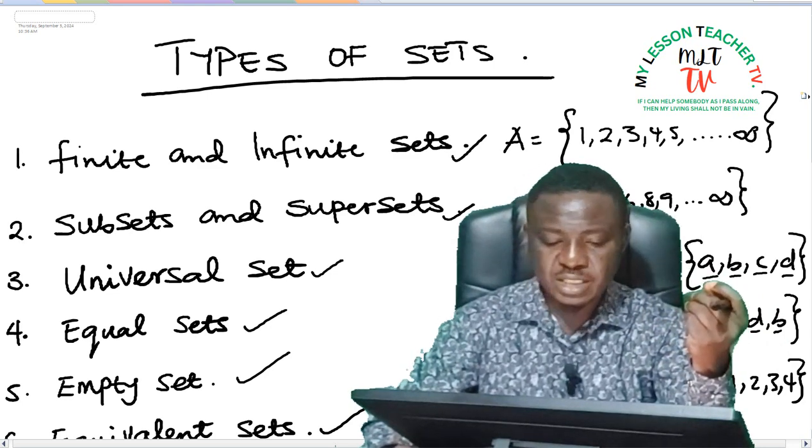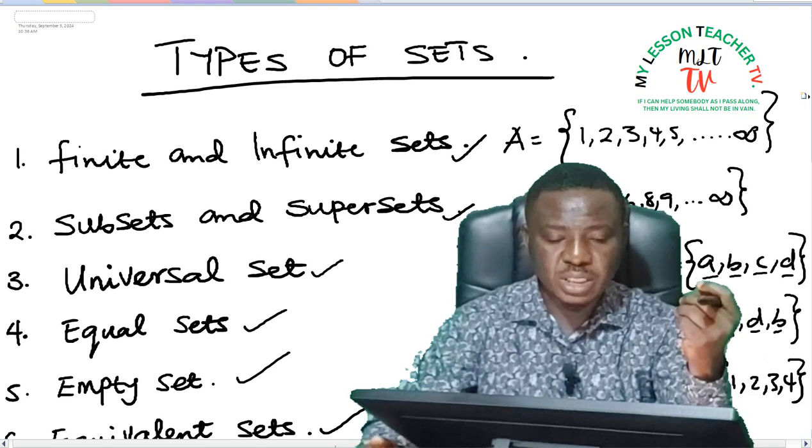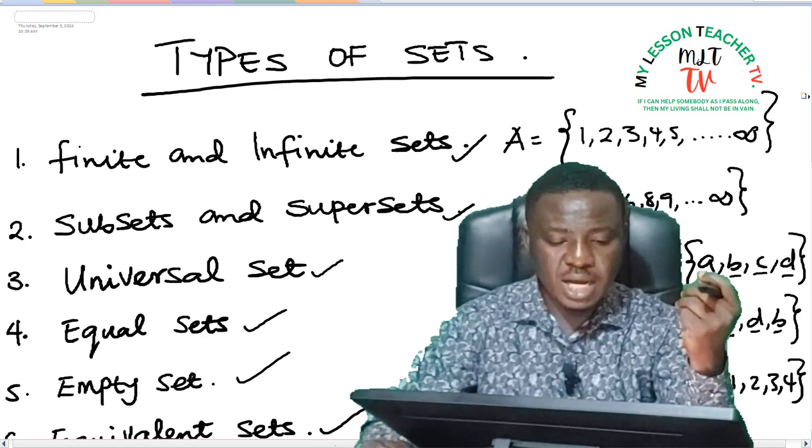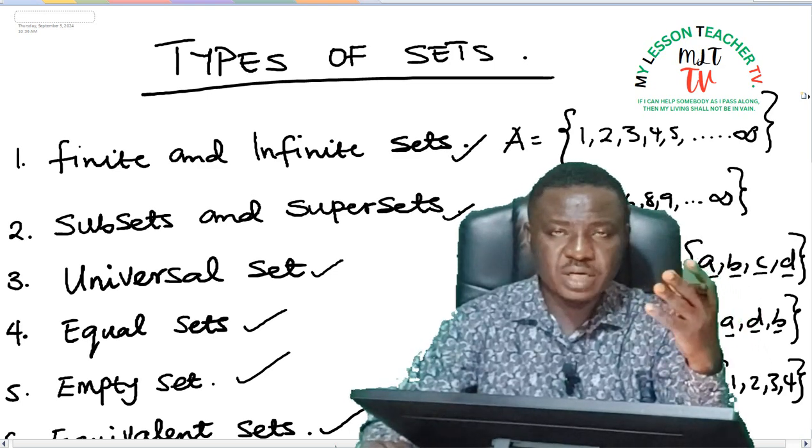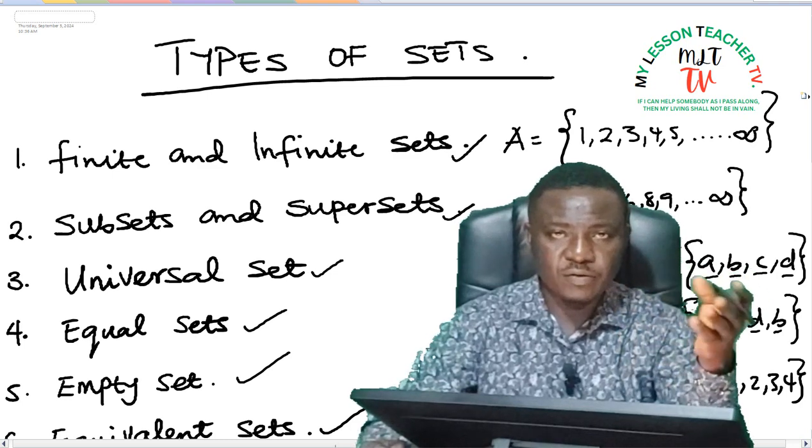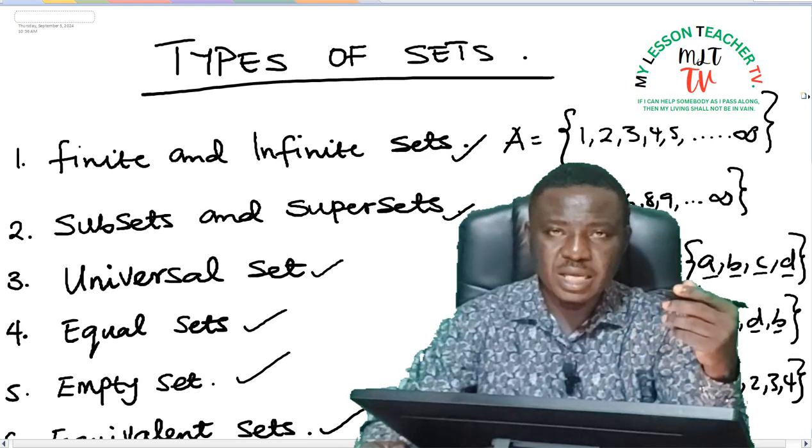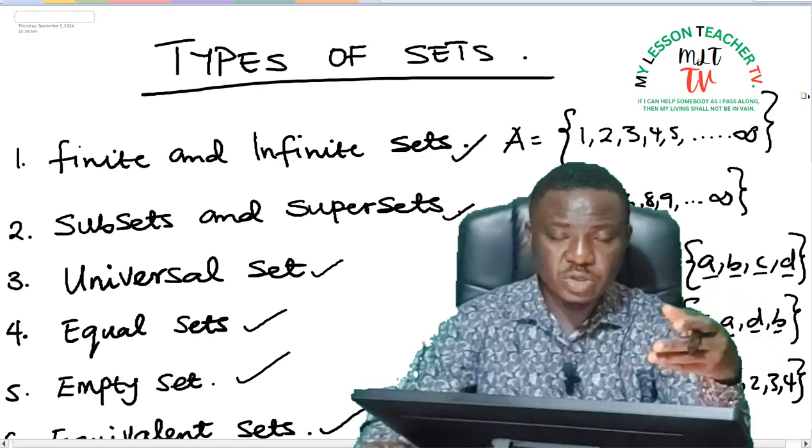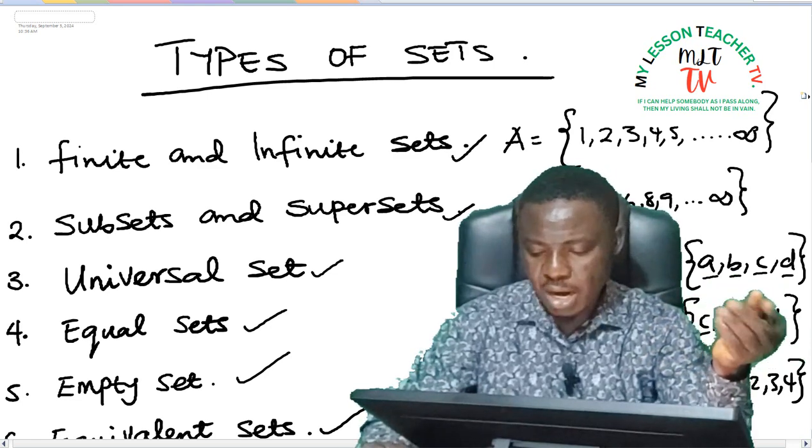While an infinite set is a set that all the elements cannot be represented or are not known. One other thing I'd like to add is in representation of infinite sets, you always have three dots either at the end or at the beginning of the element of the set, so that shows you that it's a continuous process or the elements are continuous and are uncountable.